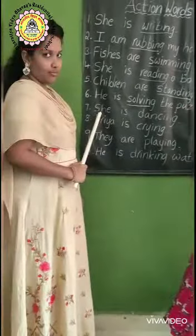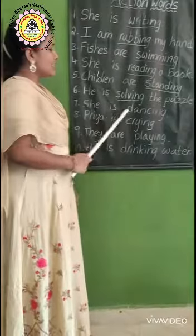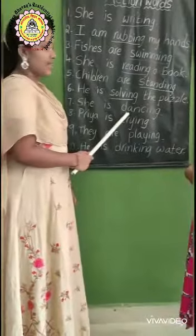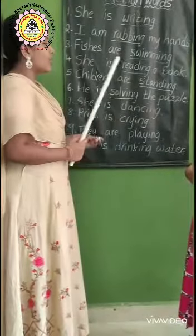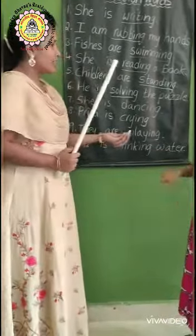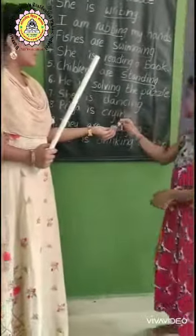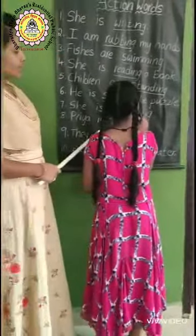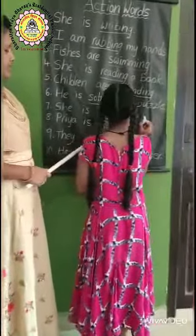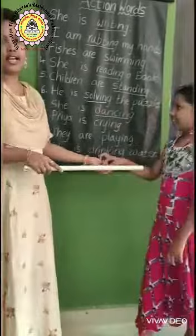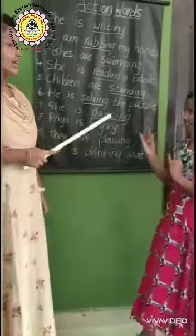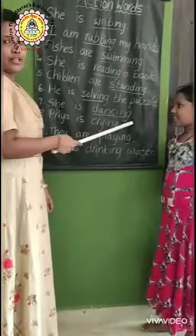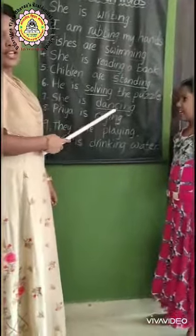Next example. She is dancing. What is the action word here? Dancing. Very good. Underline it. Dancing. She is dancing. D-A-N-C-I-N-G. Dancing.